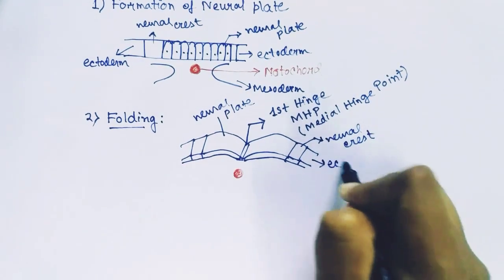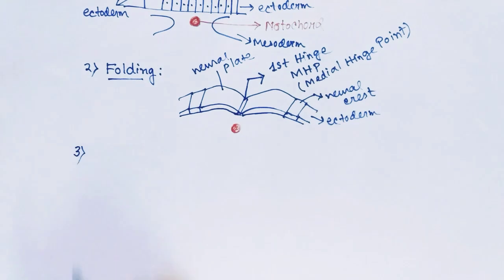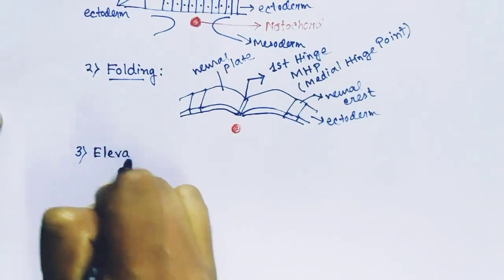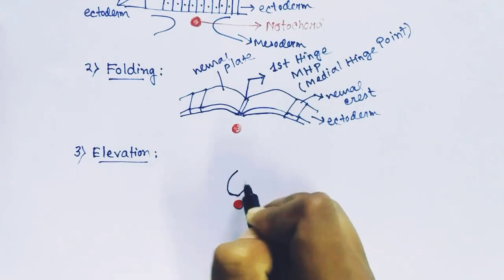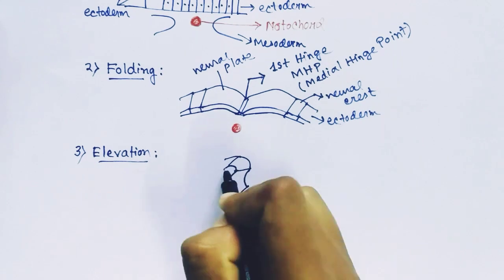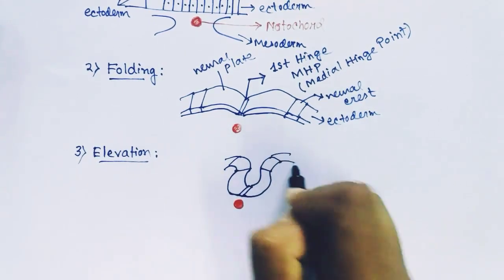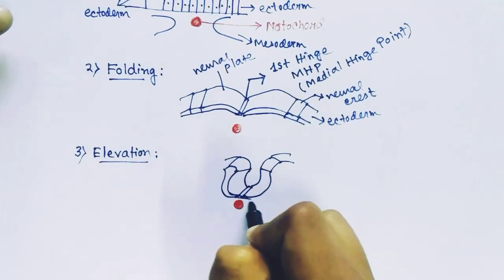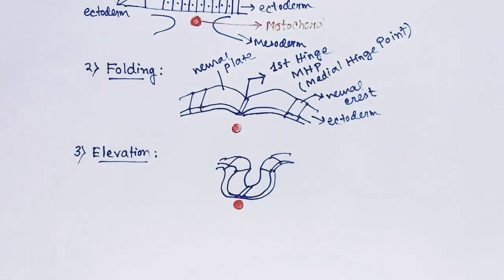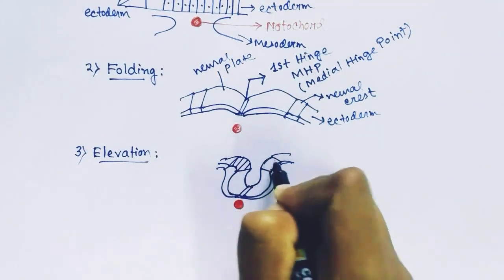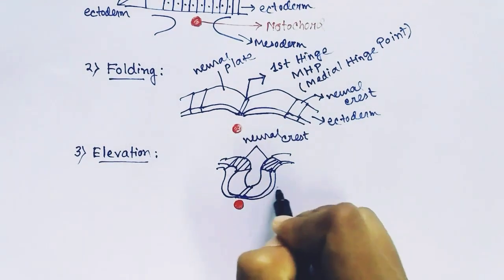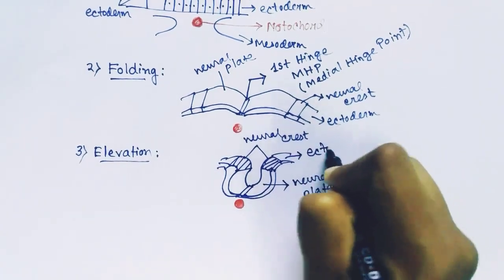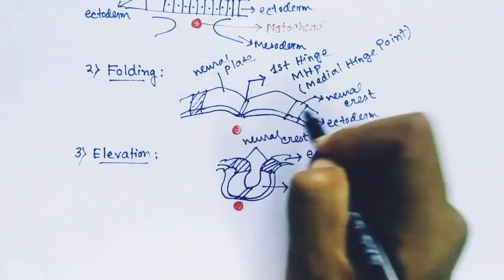The neural plate is elevated slightly, with neural crest cells and surface ectoderm on the sides. The next process is elevation: the notochord remains at the same position while the neural plate elevates, keeping the hinge at that same position. The neural plate elevates and forms a neural groove. The neural crest cells are also elevated and come closer to each other, while the neural plate has formed a groove-like structure.